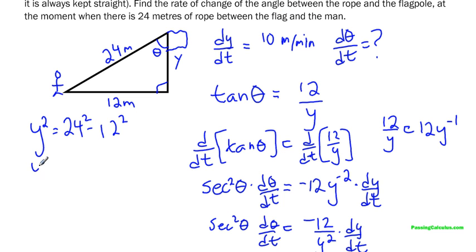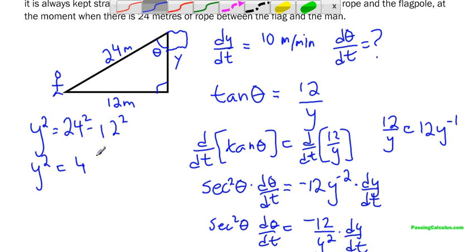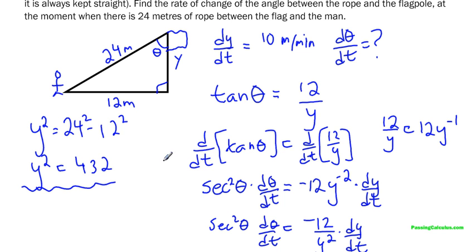So I like to leave mine just simply y squared because that's what's in our formula. There's no need to find y and then square it again. I'm just going to find y squared and I'll just tack that right into the formula. So 24 squared minus 12 squared is 432. So I'm going to throw that right in the formula. 432.